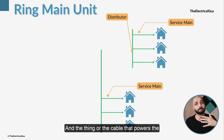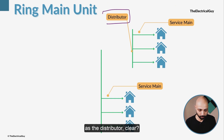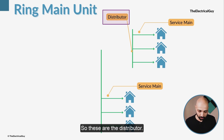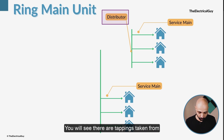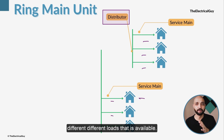The service main gets its power from somewhere, and the cable that powers the service main is what we call the distributor. You will see there are tappings taken from the distributors, and those tappings are given to the different loads that are available.